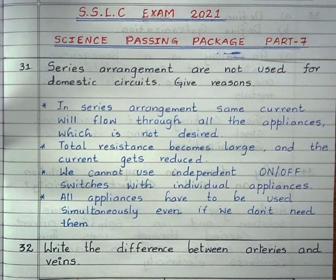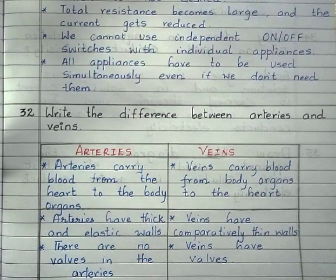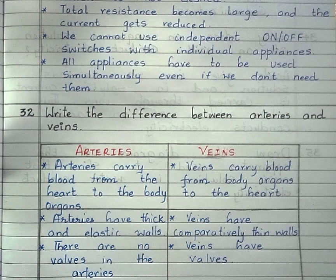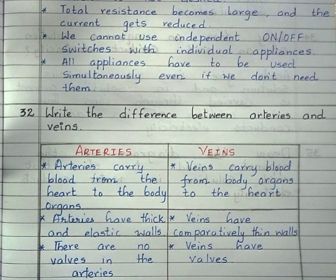All appliances have to be used simultaneously even if we don't need them. These are the reasons why we don't use series arrangement in domestic circuits.